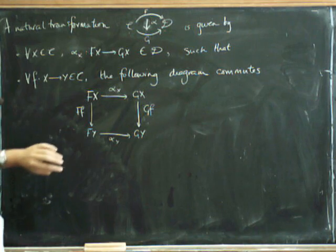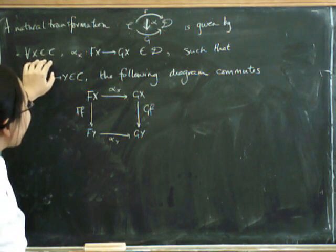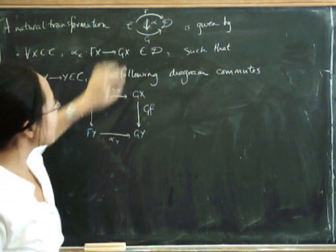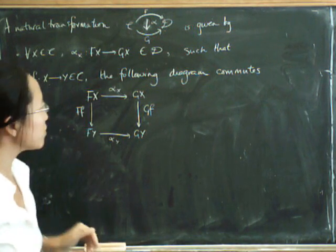So a natural transformation is given by, for every object in C, a morphism in D, and for every morphism in C, this naturality square has to commute.